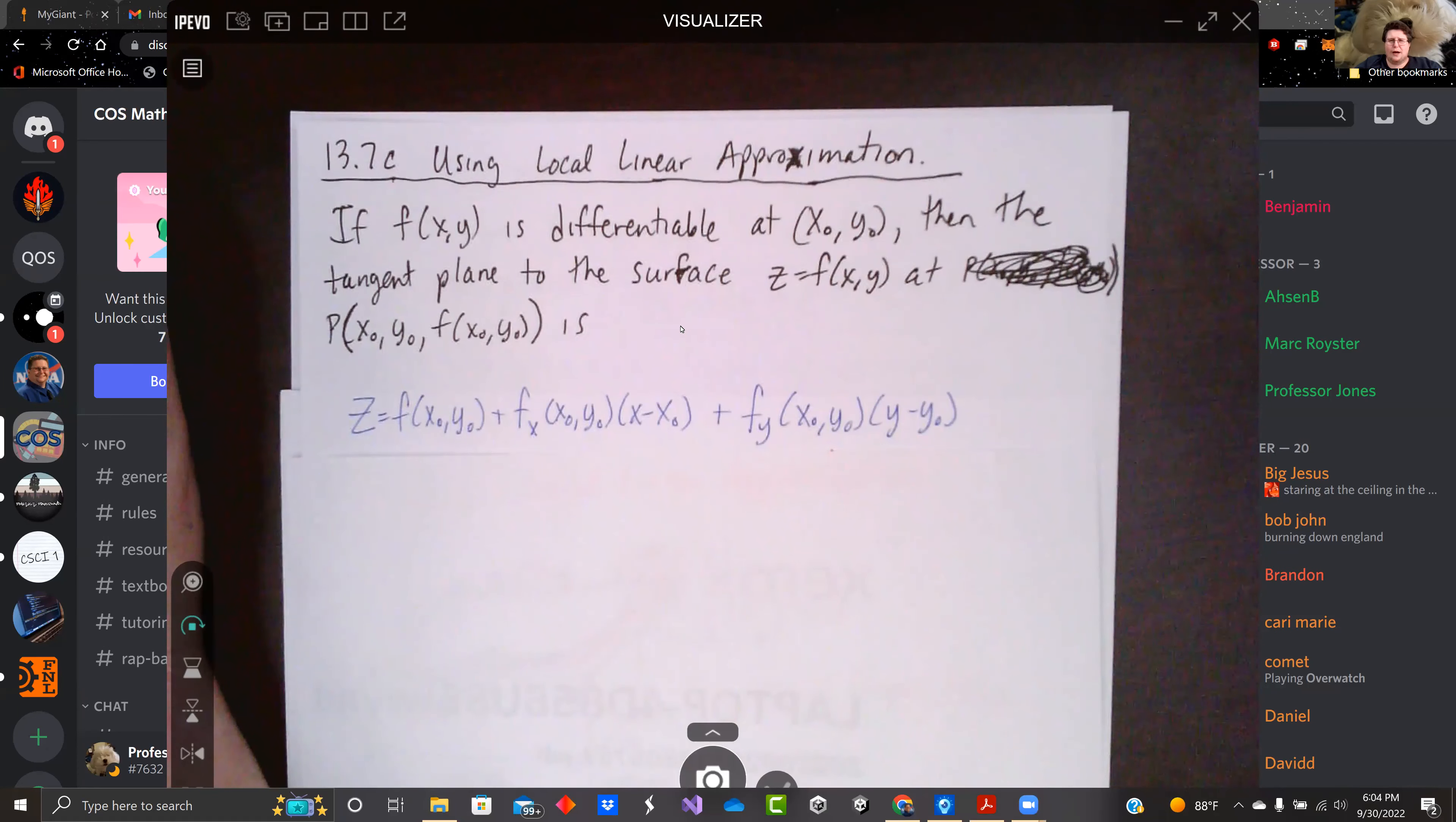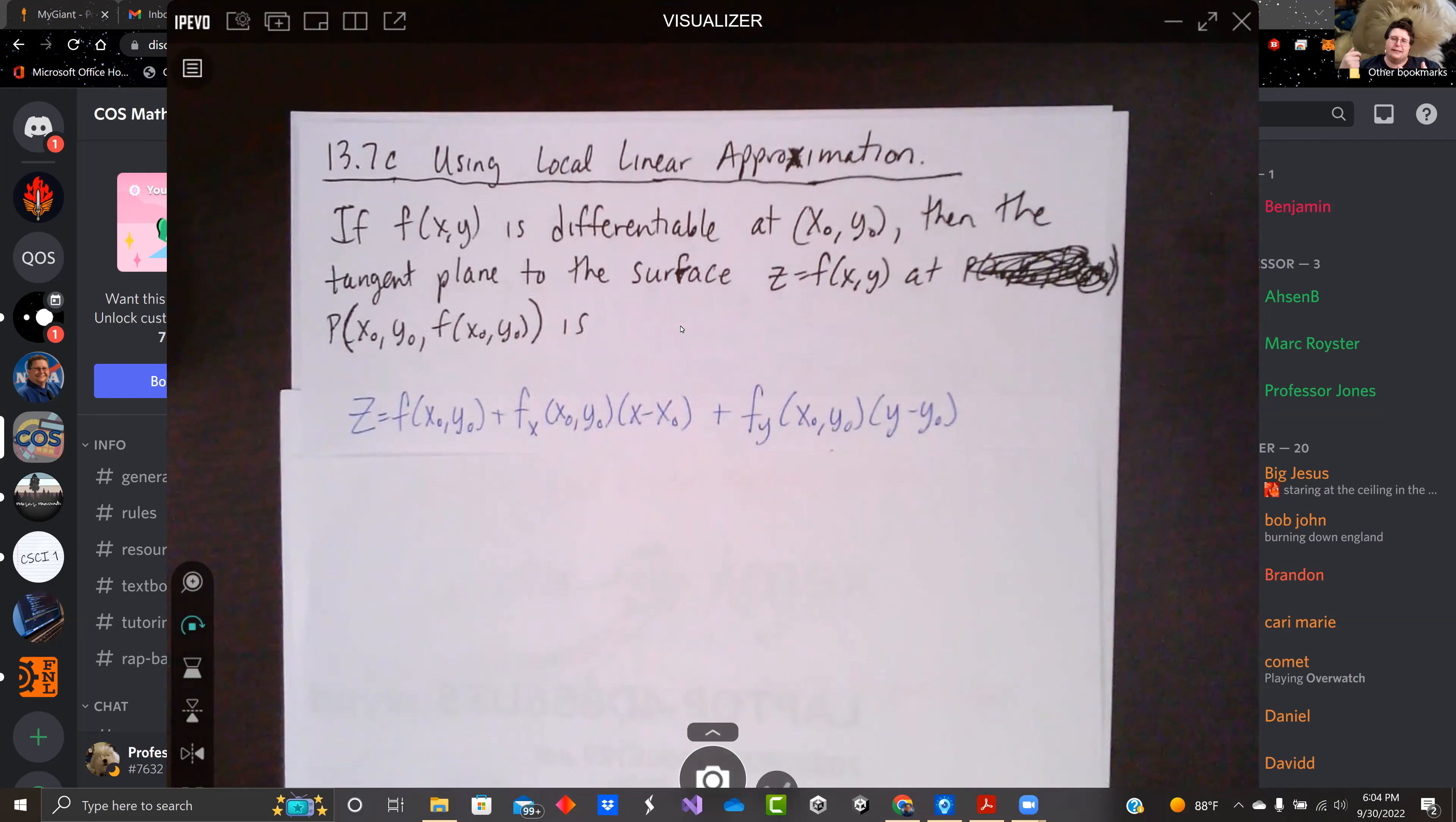We've got f(x,y). It's differentiable at (x₀,y₀). Then the tangent plane to the surface z at f(x,y), or z equals f(x,y) at that point. We're looking at the point (x₀,y₀,z), which is (x₀,y₀, f(x₀,y₀)), since z is that function.